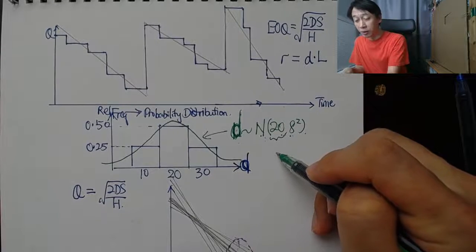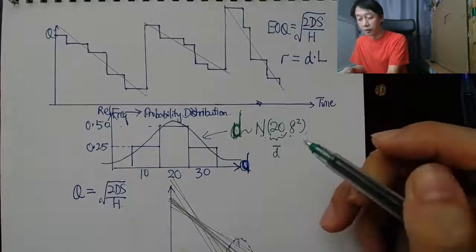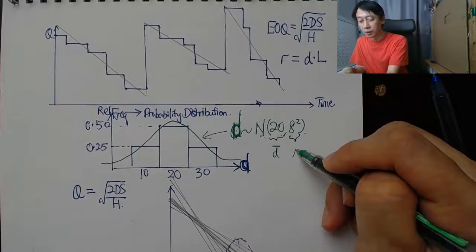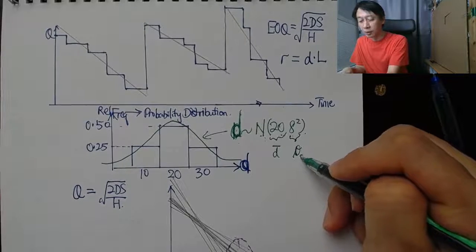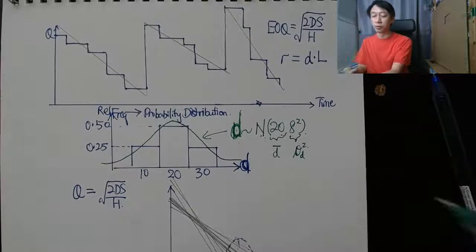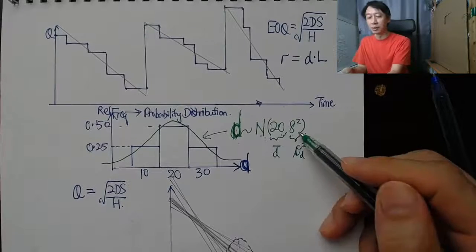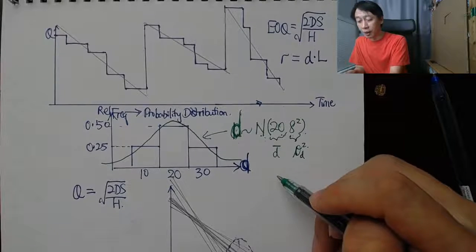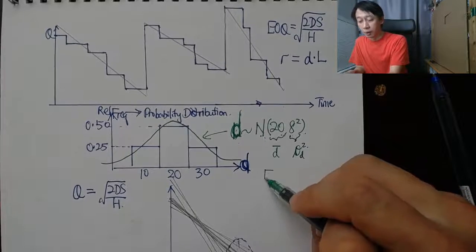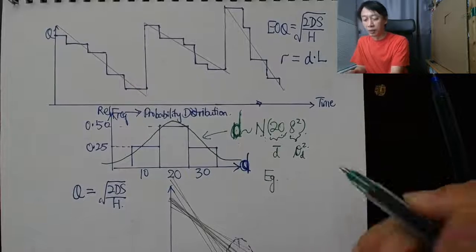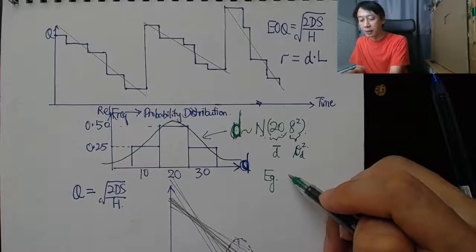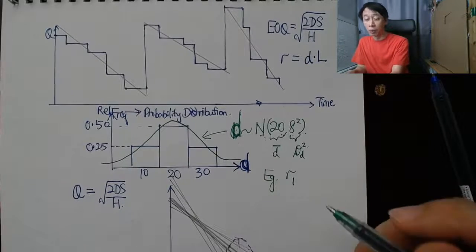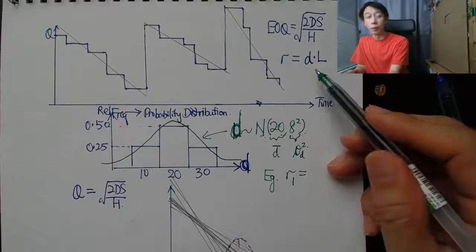If we use the mean as our D, all right, if we use the mean, which is basically, we can call it D bar, just the mean of the daily demand, and 8 is our sigma D squared, just to show that sigma D is our 8, then what we have is that, I would call it example because this is not our final form yet.